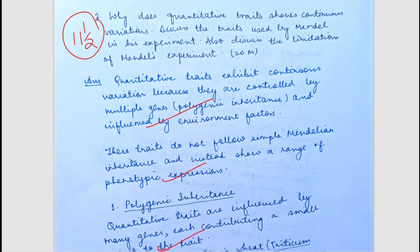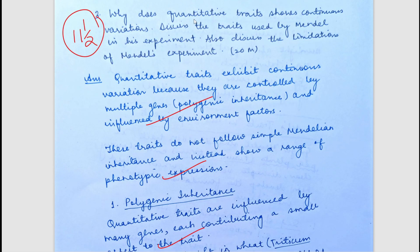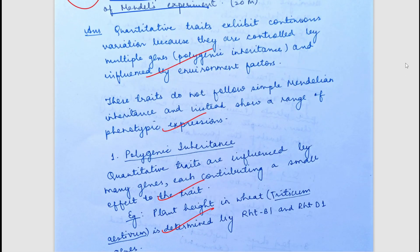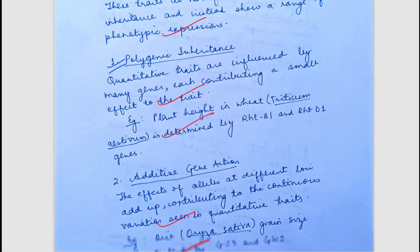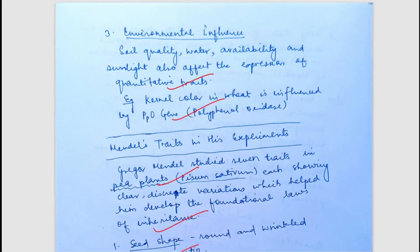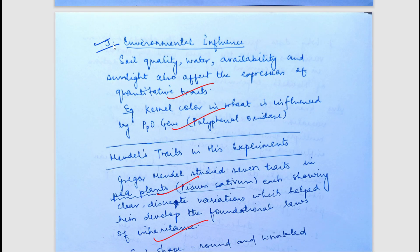The next question asks why quantitative traits cause continuous variation, and also discusses the traits used by Mendel in his experiment along with the limitations of Mendel's experiment. Quantitative traits cause continuous variation through several reasons: polygenic inheritance, additive gene action, and environmental influence — all of which the student has well mentioned with examples. You can pause the video to read the answer in detail.